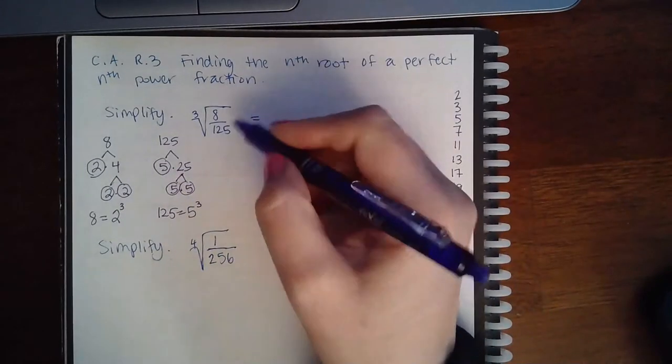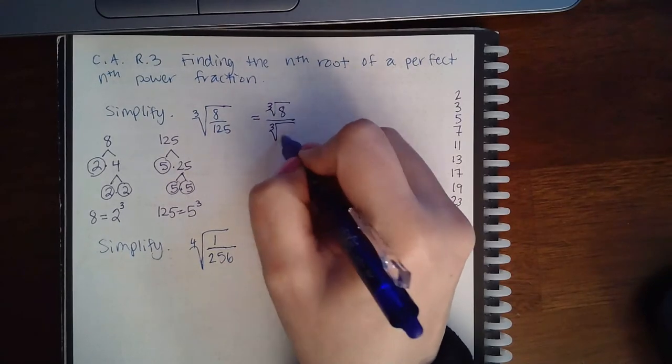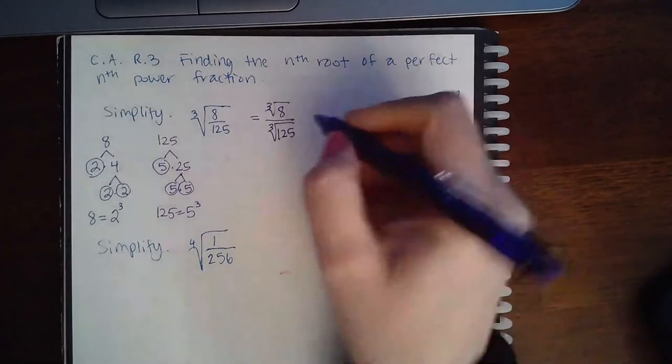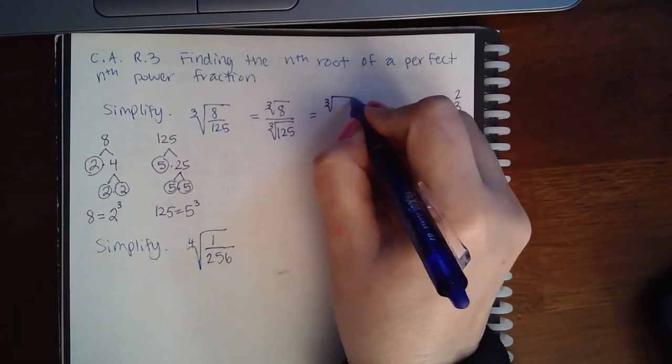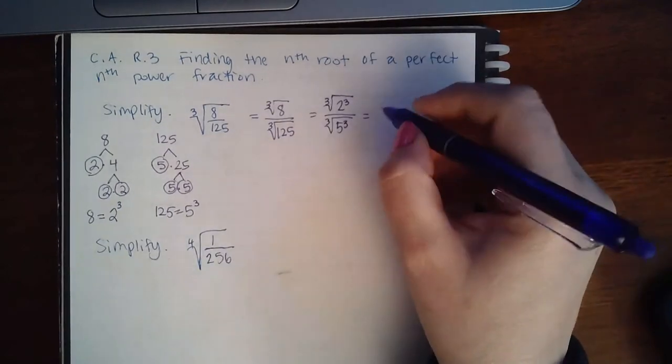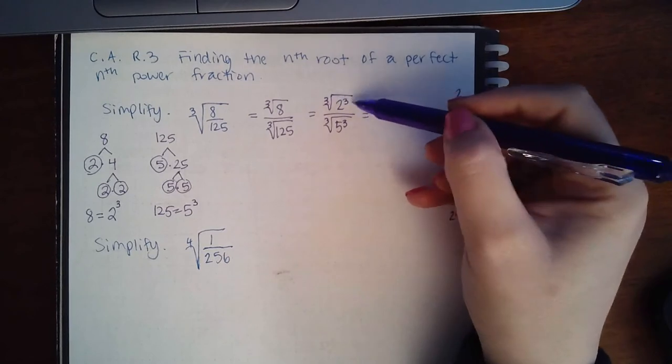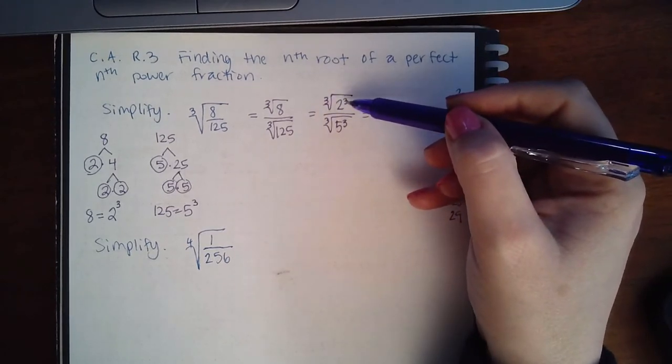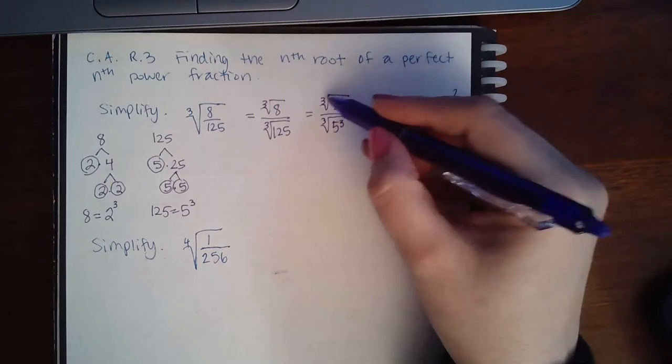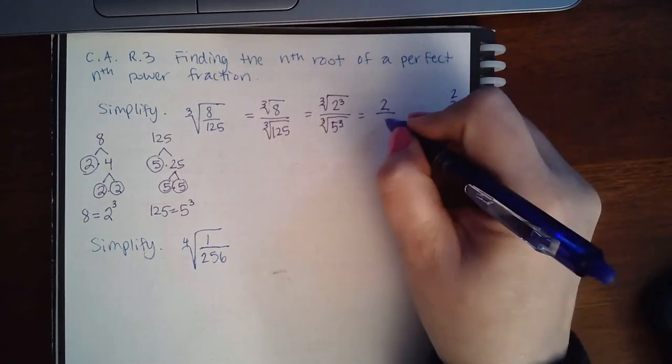So when I apply this, 8 and 125 are real numbers, so I can apply this property that allows me to split the radical to take the radical of the numerator and the radical of the denominator separately. Then I can do this: 2 to the third power and 5 to the third power. Then you can think of the idea that a square root and a power are inverses of each other, just like plus and minus and multiply and divide. So they undo each other. So if you've got a cube root and a cube, they basically cancel each other out and you're just left with 2. And if you have a cube root and a cube here, again, they cancel each other out and you just have a 5.